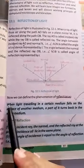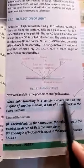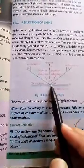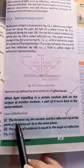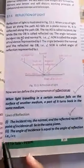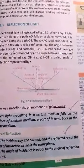We can now define reflection: when light traveling in a certain medium falls on the surface of another medium, a part of it turns back into the same medium. The laws of reflection state: first, the incident ray, the normal, and the reflected ray at the point of incidence all lie in the same plane. Second, the angle of incidence is equal to the angle of reflection.